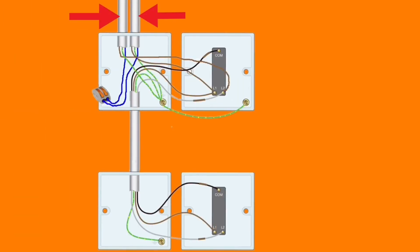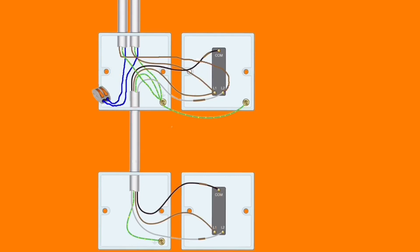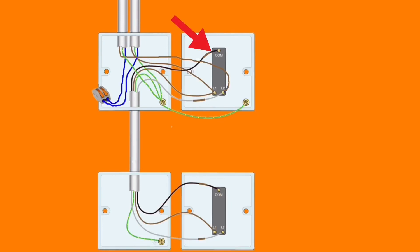To convert this to two-way switching, the conductors coming into the top switching point are identical as before - a supply coming in carrying line, neutral, and CPC, and one going out which is the switching line, neutral, and CPC. We've replaced the one-way switch with a two-way switch. Our two brown conductors, previously in common and L1, have now been reattached to the two-way switch going in L1 and L2. We've introduced the three-core cable connecting this two-way switch with the new two-way switching position, using black for common identified with brown sleeving, brown in L1, and gray - also identified with brown sleeving - in L2.